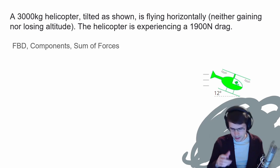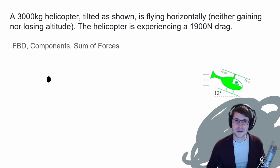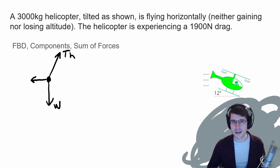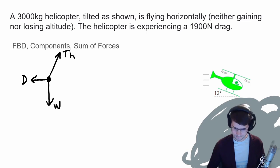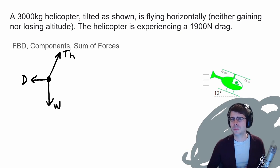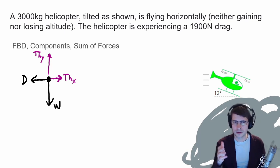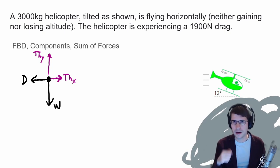Let's start by drawing the free-body diagram. We have three forces. Draw a dot to represent the helicopter, then draw the thrust force up and to the right, the weight pointing down, and the drag force pointing to the left — slowing the helicopter since it's moving to the right. Since the thrust is diagonal, we break it into X and Y components. Once we have those components, we can ignore the diagonal thrust vector to clean up the diagram.